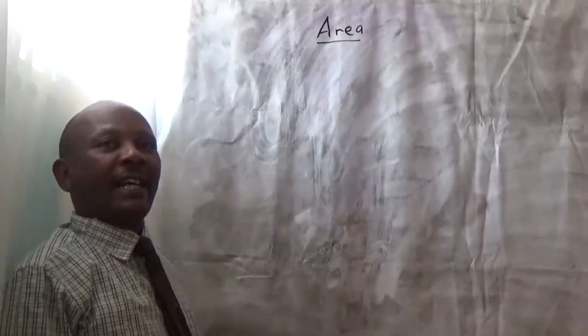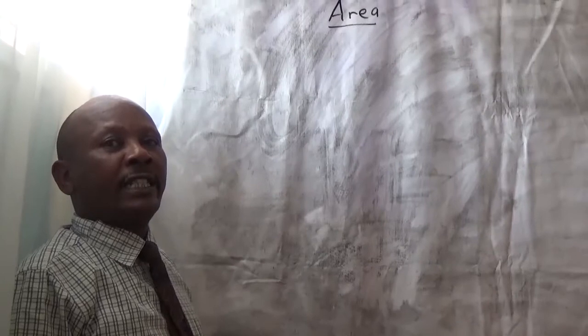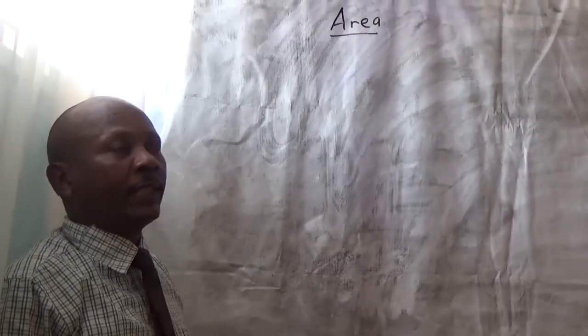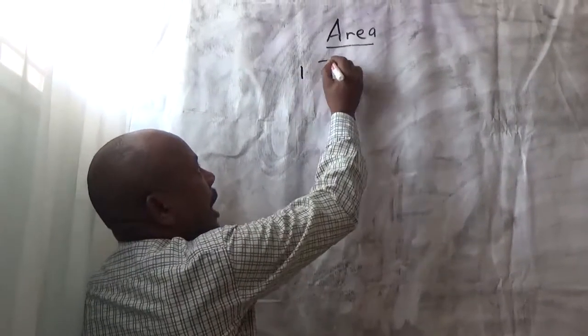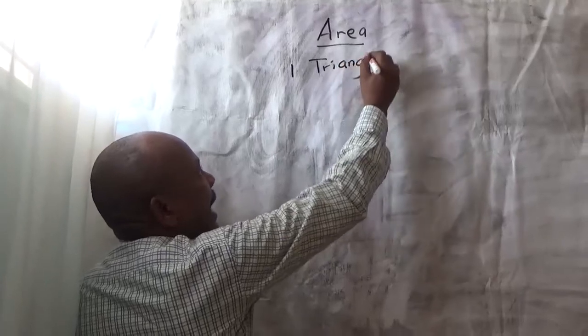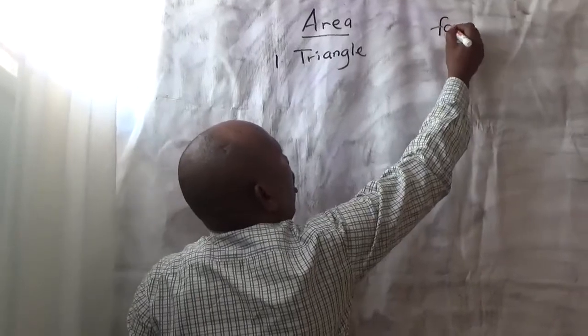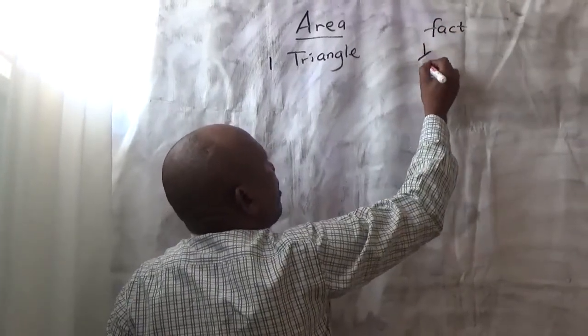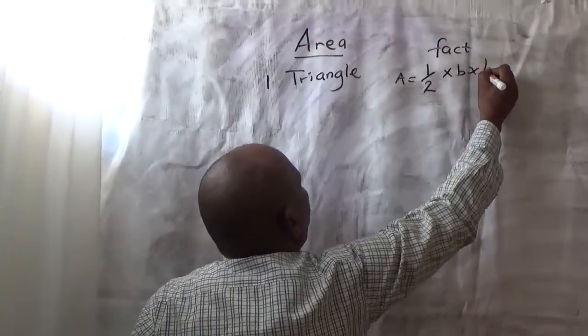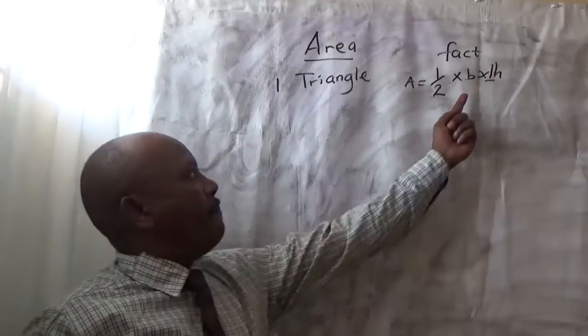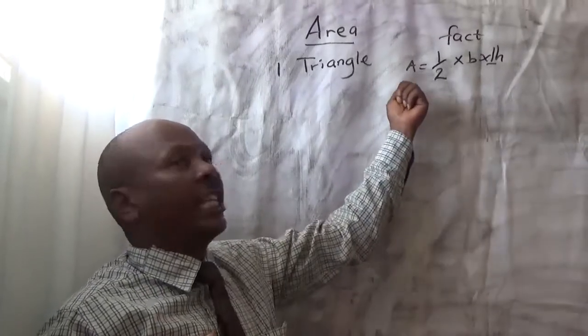Area is the space bound by rights. We have got different geometrical shapes in which the examiner in KCP will ask in maths. One is a triangle. In a triangle, by now, we have the main fact or concept. We have the formula half times base times perpendicular height. The base and the perpendicular height are the major variables which gives you the area.